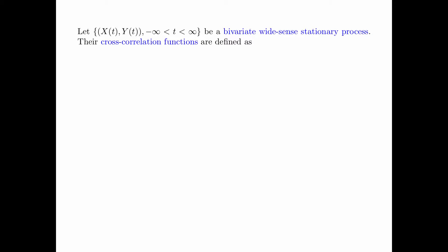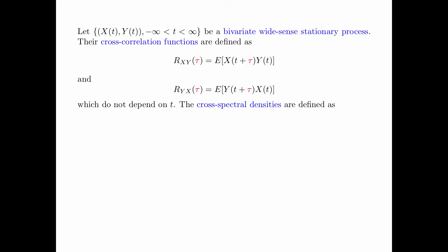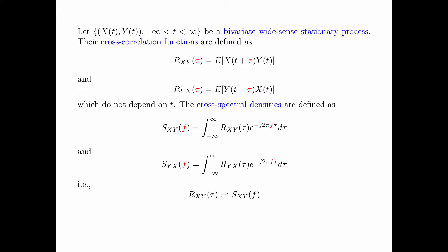Let x of t, y of t be a bivariate wide sense stationary process. The cross correlation function is defined as rxy of tau equals the expectation of x of t plus tau times y of t. These quantities do not depend on t, and the cross spectral densities are defined as their Fourier transforms. Namely, sxy of f is the Fourier transform of rxy of tau. That is, rxy of tau and sxy of f form a transform pair, and ryx of tau and syx of f form a transform pair.